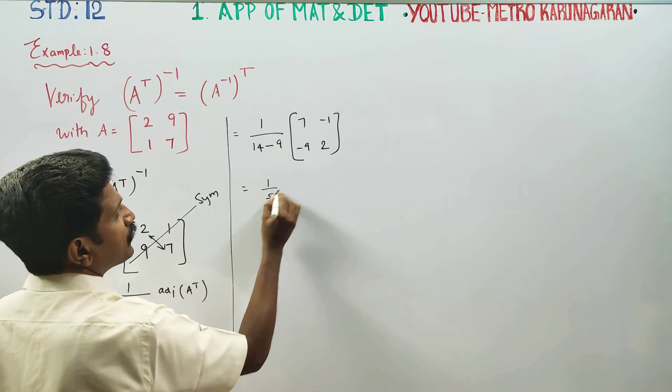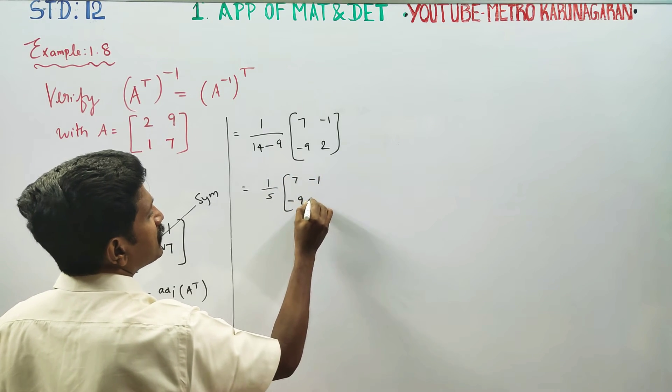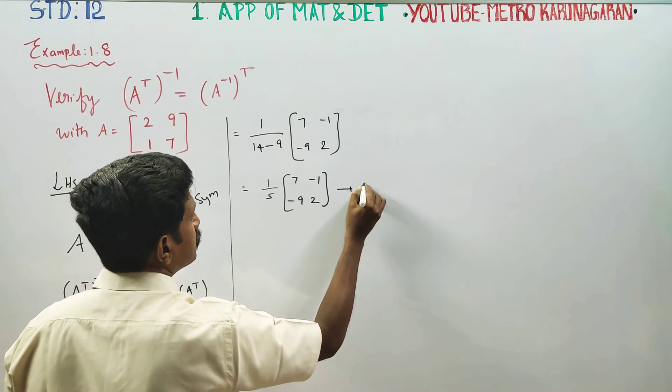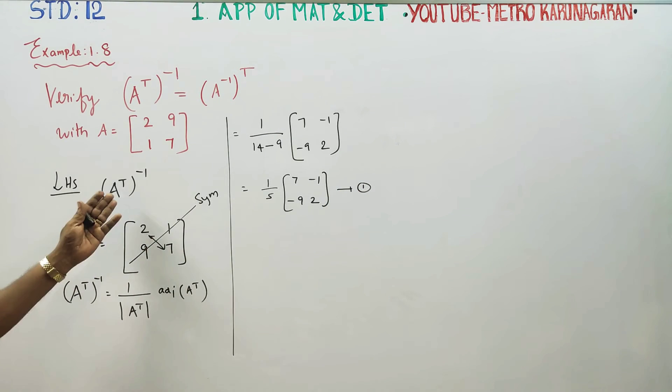Therefore, my answer will be 1 by 5, 7 minus 1, minus 9, 2 is my result number 1. This is my A transpose inverse.